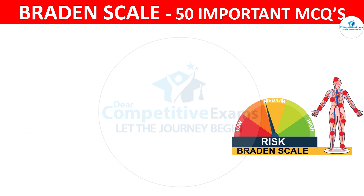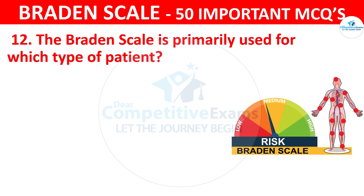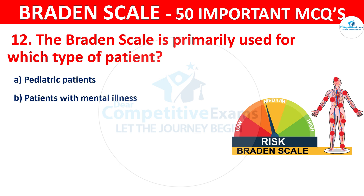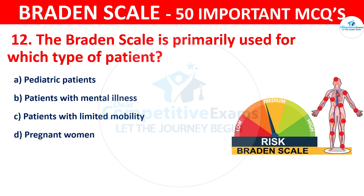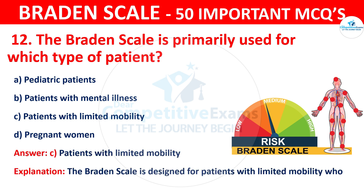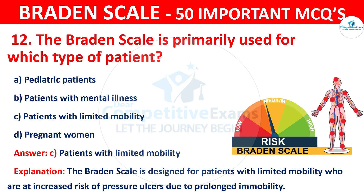Question number twelve: The Braden scale is primarily used for which type of patient? The options are pediatric patients, patients with mental illness, patients with limited mobility, or pregnant women. The correct answer is C — patients with limited mobility. The Braden scale is designed for patients with limited mobility who are at increased risk of pressure ulcers due to prolonged immobility.